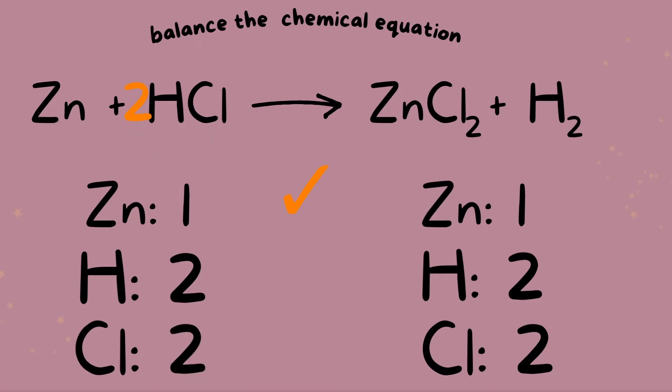So now we have the same number of atoms of each element on both sides of the equation. And it's abiding by the law of conservation of mass, meaning we have the same amount of atoms of each type of atom on both sides. Also meaning we have the same amount of mass or the same number of moles of each atom on both sides.